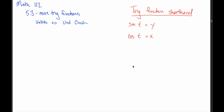It turns out that there are four more trig functions — sine and cosine are just the first two. Those additional trig functions are the topic of 5.3. There are four more for six total: the tangent of t, the cosecant of t, the secant of t, and the cotangent of t. Almost always those are abbreviated as you see here.